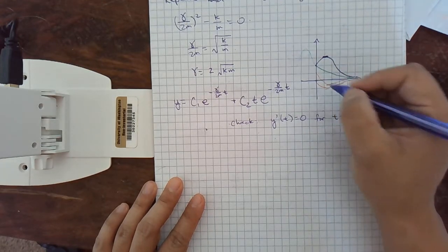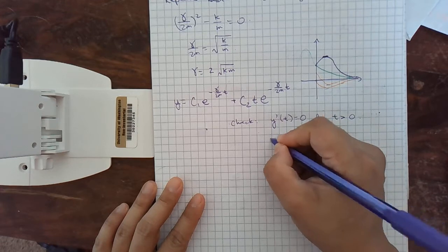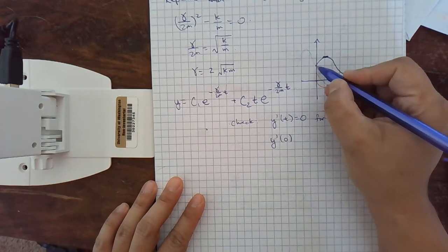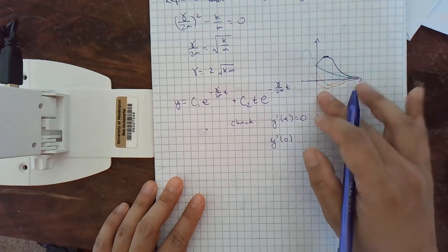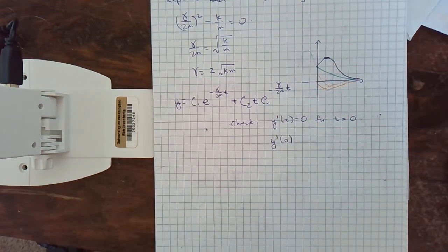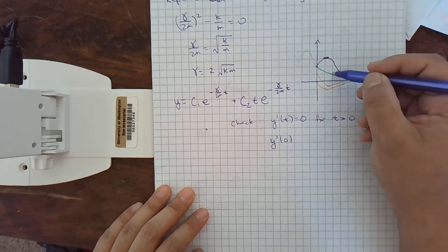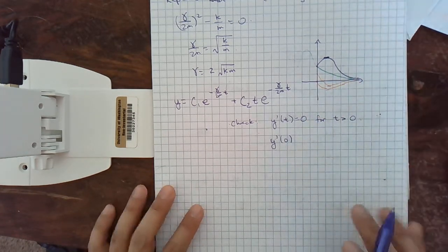And then we can also check the slope at 0. Notice on the green one and the orange one, the slope at 0 is negative. And on the purple one, the slope at 0 is positive. So, those two things will fully determine which of these graphs it is.